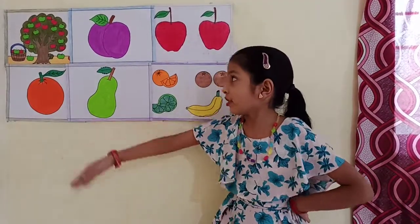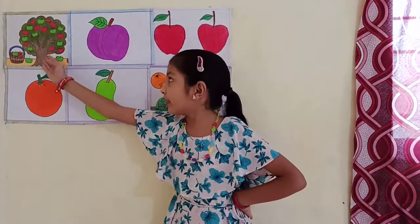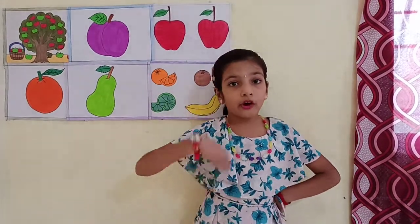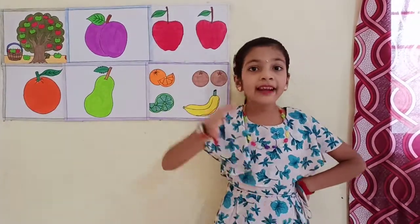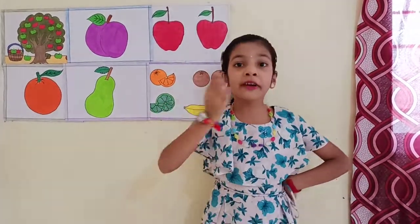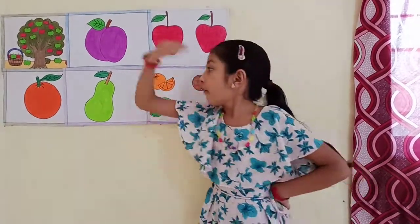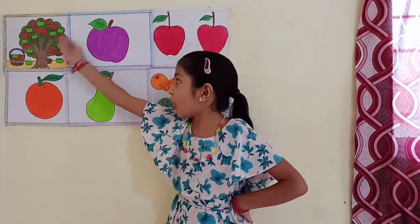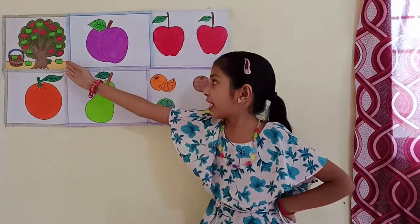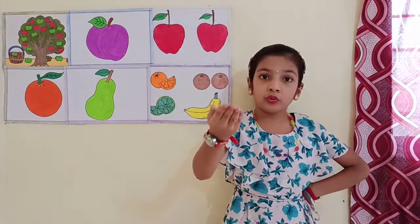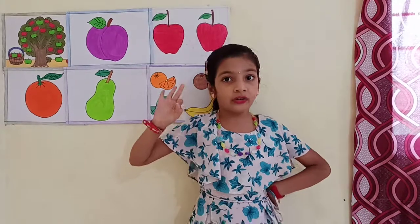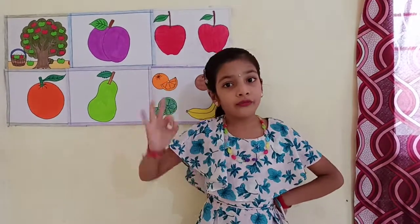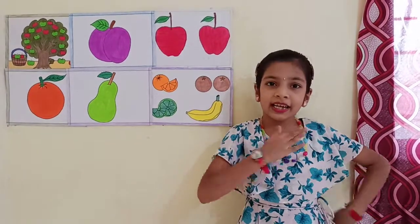5 Oranges on the tree, 5 for you and 0 for me. 0 for me.